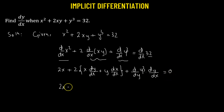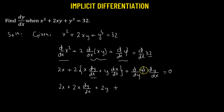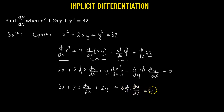Now we have 2x, and distributing the 2 gives us 2x times the derivative of y with respect to x, plus 2y. The derivative of x with respect to x equals 1. Plus, the derivative of y cubed with respect to y is 3y squared, multiplied by the derivative of y with respect to x, equals 0.